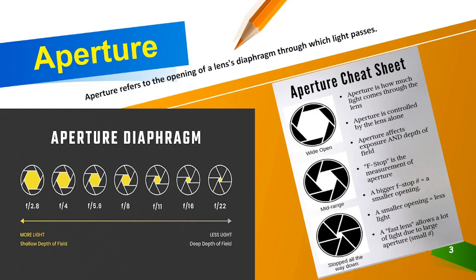F-stop is the measurement of aperture. A bigger f-stop is equal to a smaller opening. A smaller opening is equal to less light. A fast lens allows a lot of light due to a large aperture.